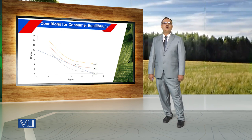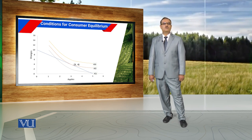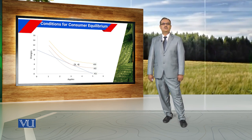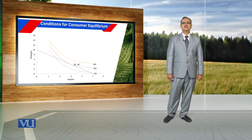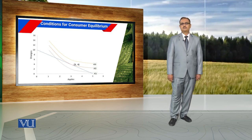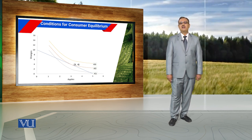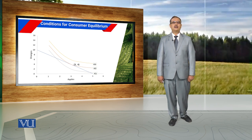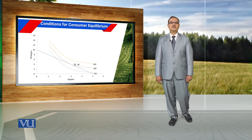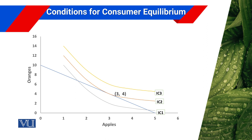On IC2 indifference curve, the consumer will choose that combination of commodities where the slope of the indifference curve and the slope of the budget line become equal. By choosing such a combination, the consumer can maximize his satisfaction. Although on IC1 there are certain points where it intersects the budget line, those combinations are not indicating the maximum level of satisfaction against a given budget constraint.